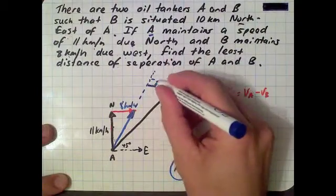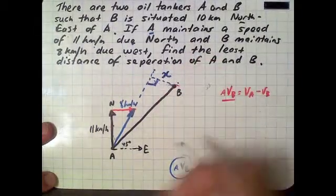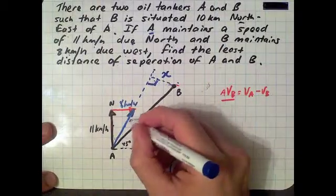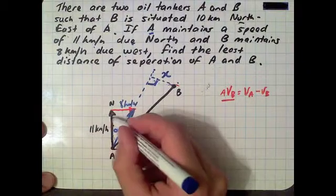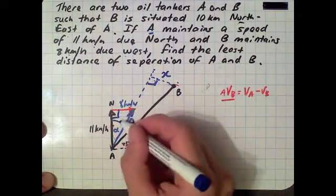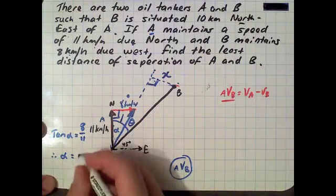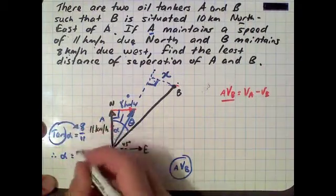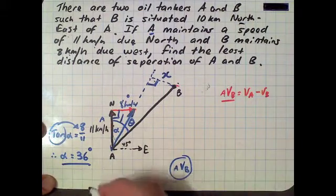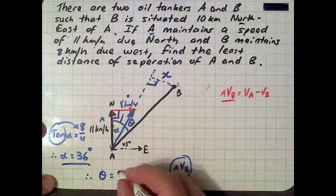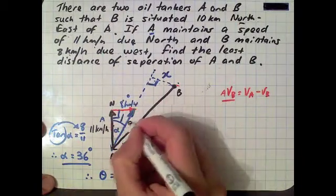We want to find the perpendicular distance x. To do that, we need the angle inside our triangle - angle theta. We know the whole big angle is 45 degrees. We've got a right angle triangle with sides 8 and 11, that's O and A, so we use tan: tan of that angle equals 8 over 11. That equals tan inverse of 8 divided by 11, which we calculate to be 36 degrees. The big angle is 45 degrees, so 45 take 36 gives us 9 degrees - that's the angle inside our triangle.